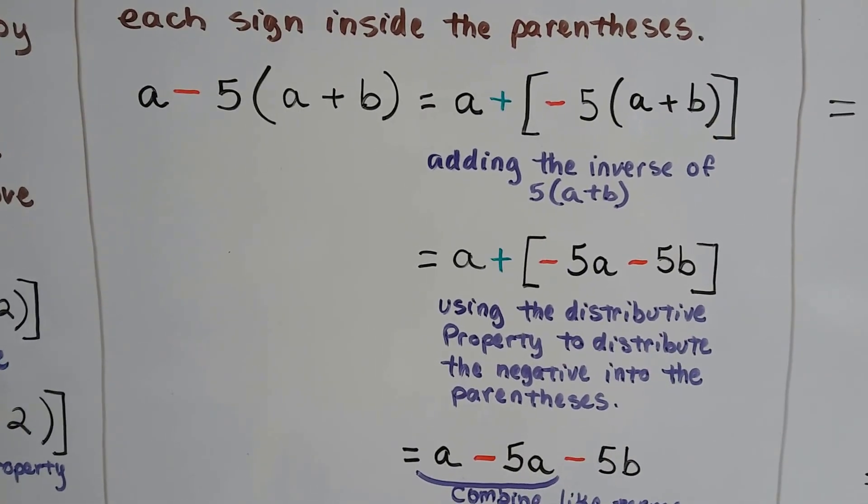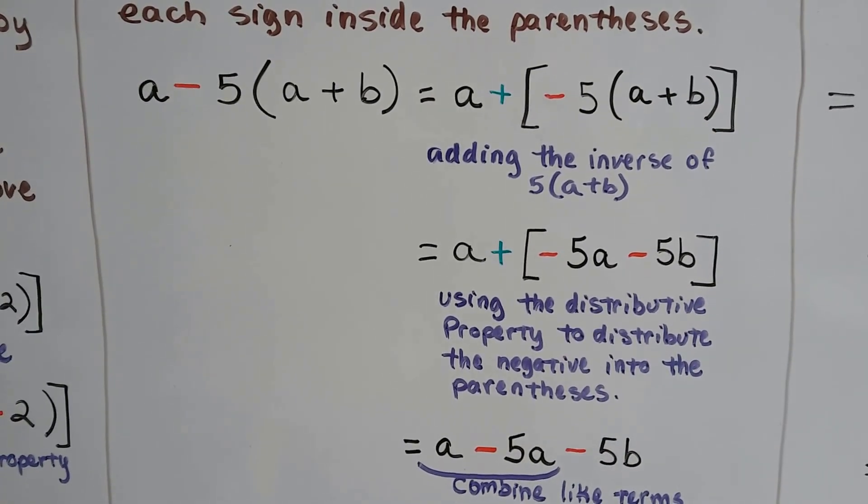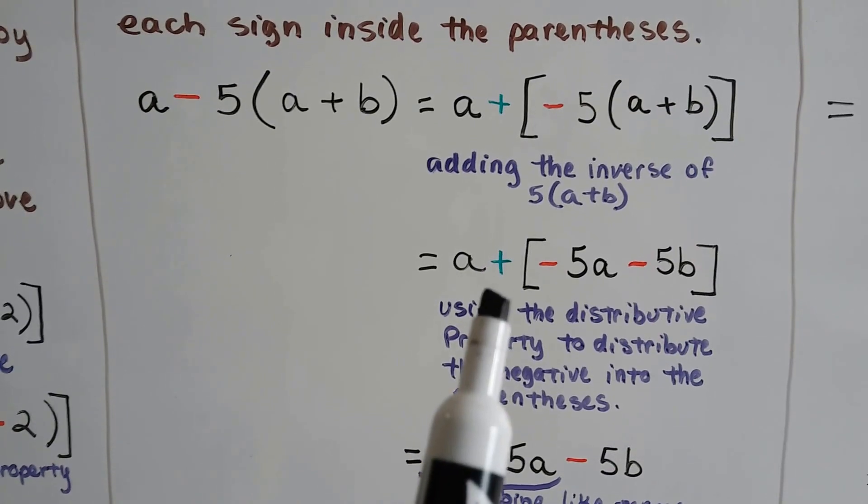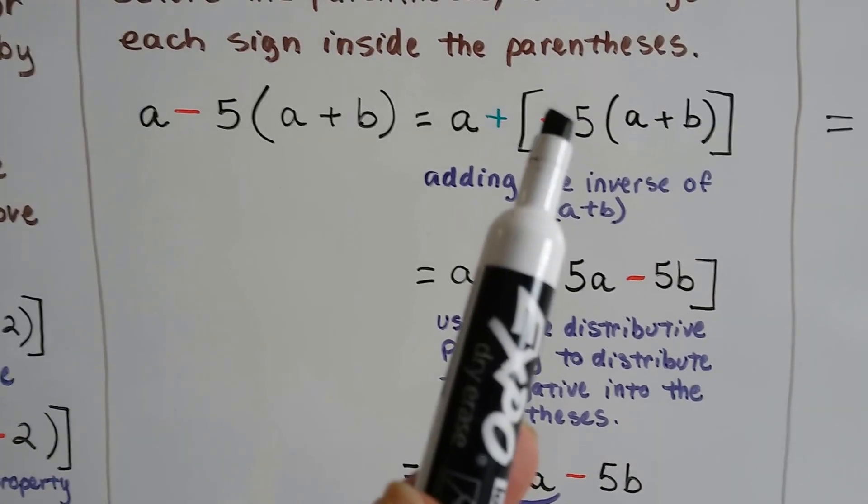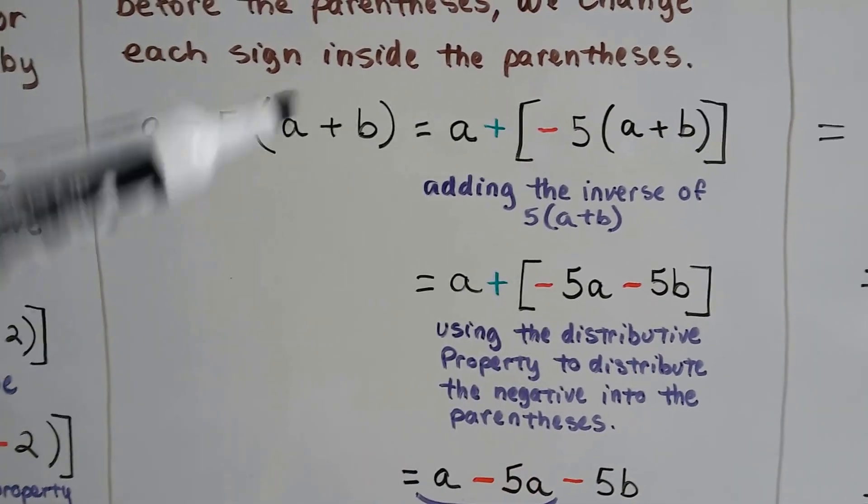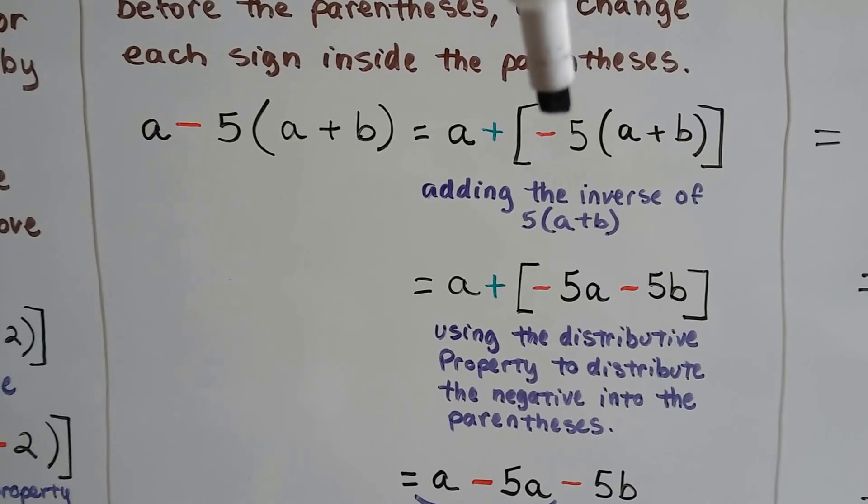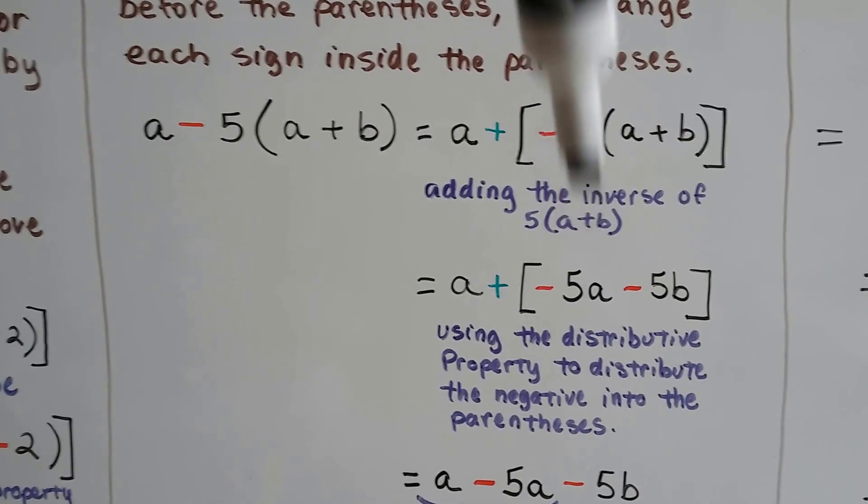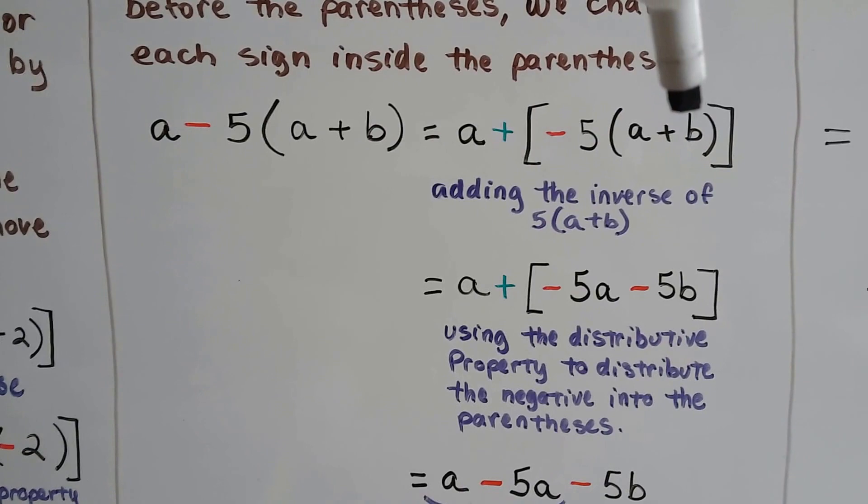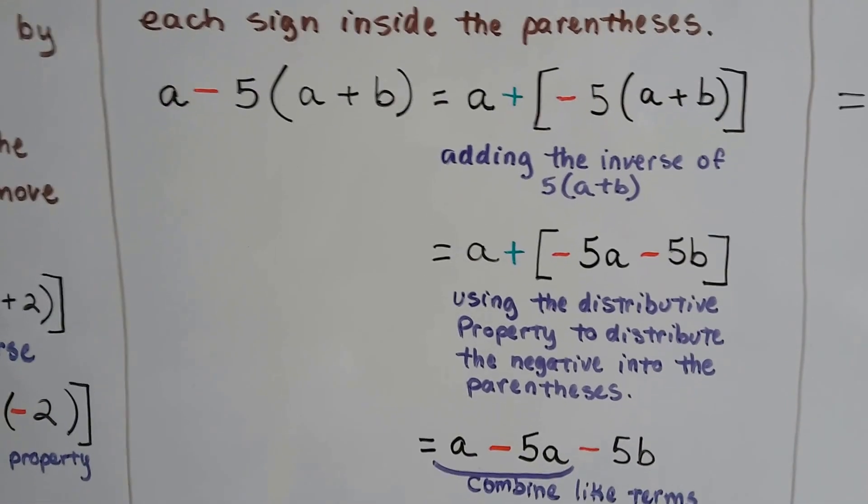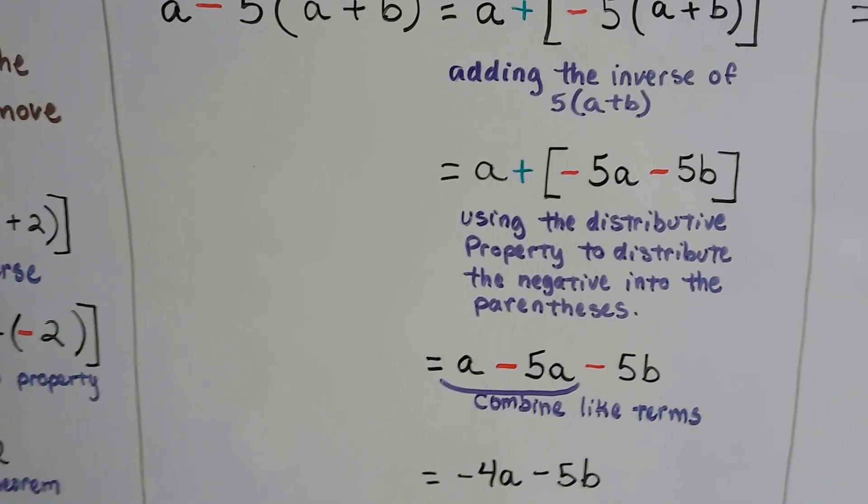Then, using the distributive property to distribute the negative into the parentheses, so we distribute this negative into the parentheses with negative 5 times a, which gives us negative 5a, and negative 5 times a positive b gives us a negative 5b. Now we just combine the like terms.